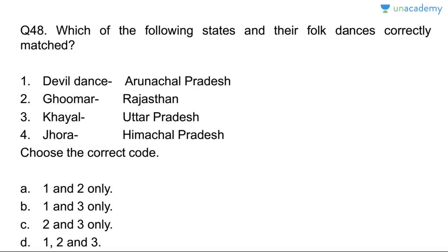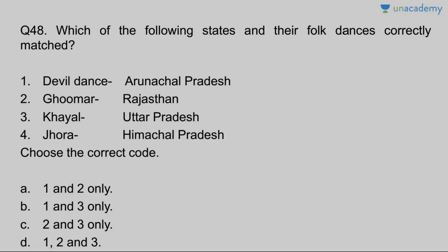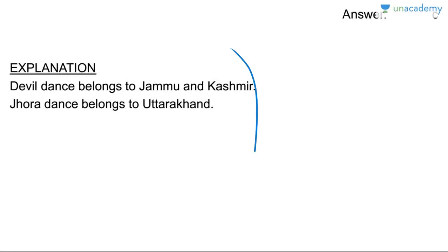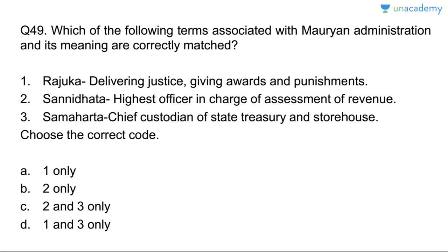Question forty-eight: state and folk dance correctly matched. Devil Dance with Arunachal Pradesh — wrong; it is in Jammu and Kashmir. Ghoomar with Rajasthan — yes. Khayal with Uttar Pradesh — yes. Jhora belongs to Uttarakhand. Answer is C, two and three.